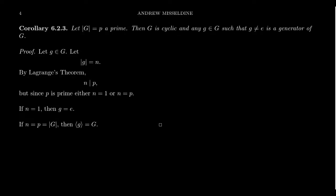Suppose G has prime order P. Then I claim that G is cyclic, and in fact every non-identity element is a generator of that group. So groups of prime order are always cyclic. This is our first classification theorem — can we classify groups up to certain types? Every group of prime order has to be cyclic, and it's an immediate consequence of Lagrange's Theorem.